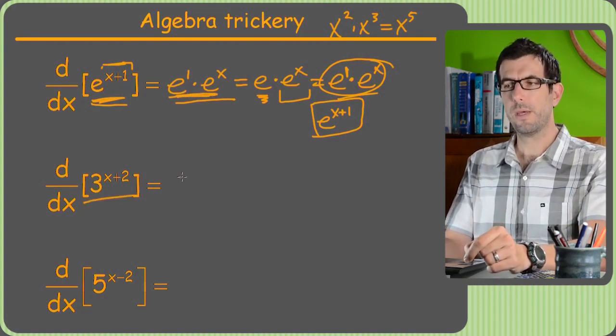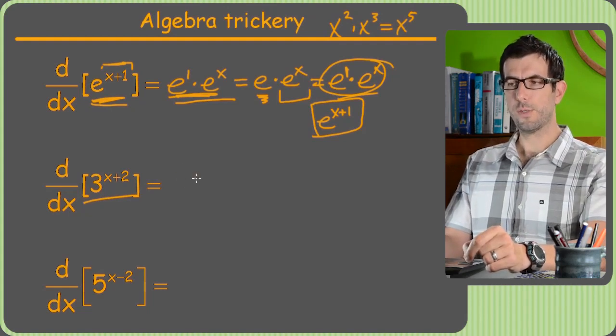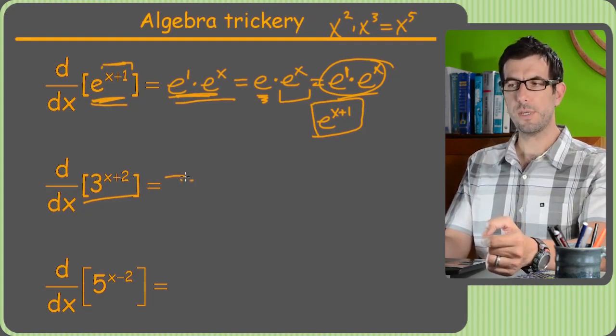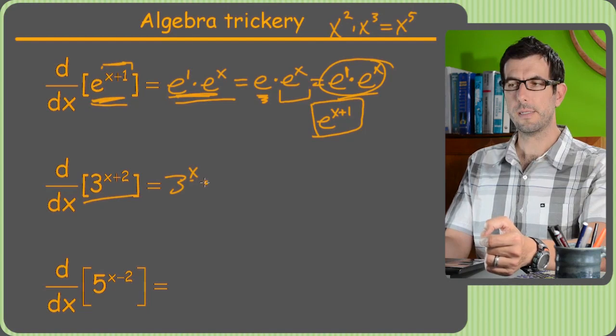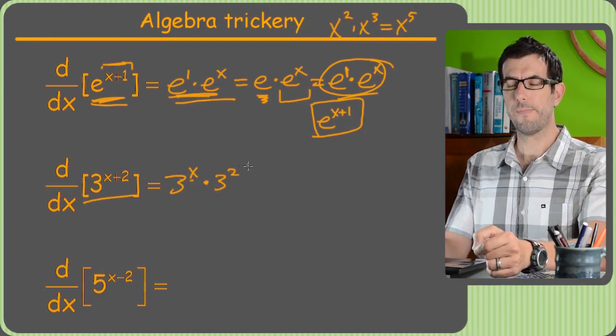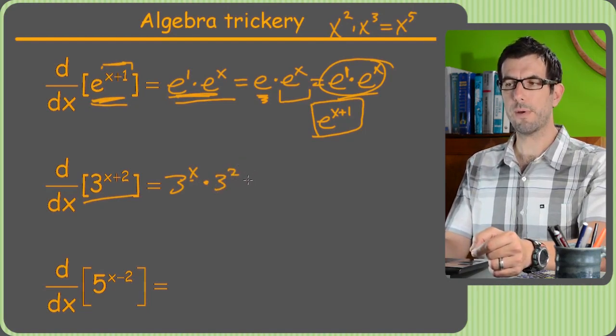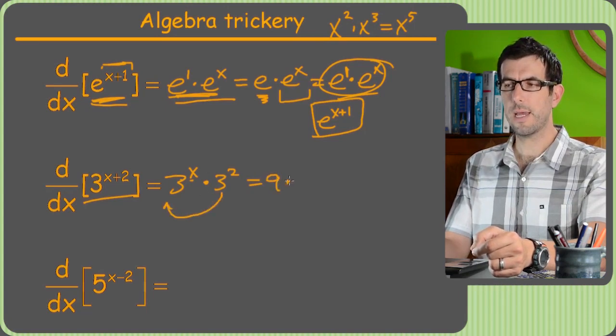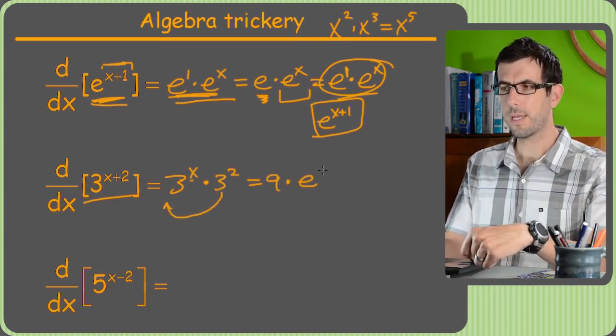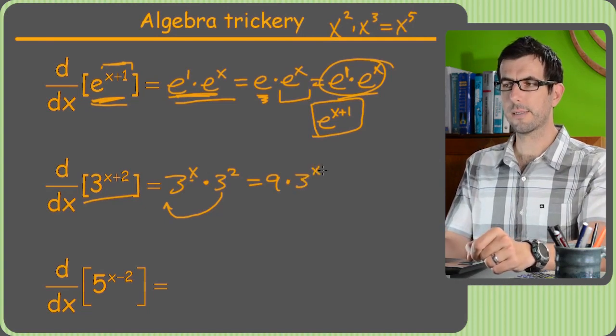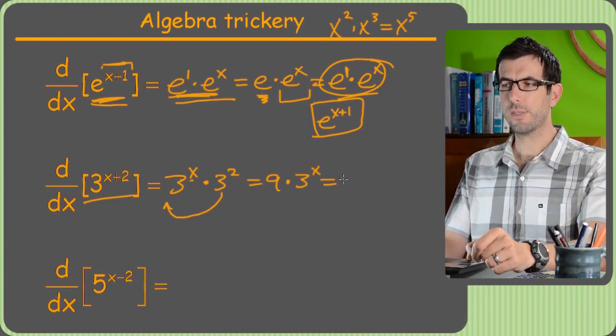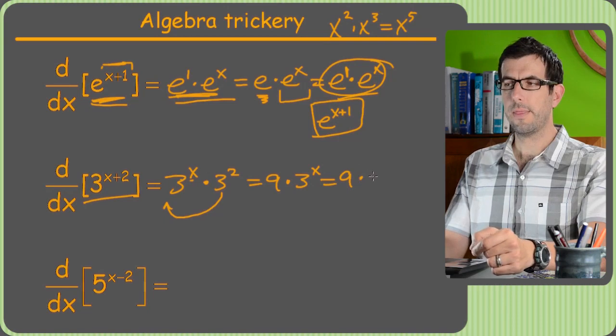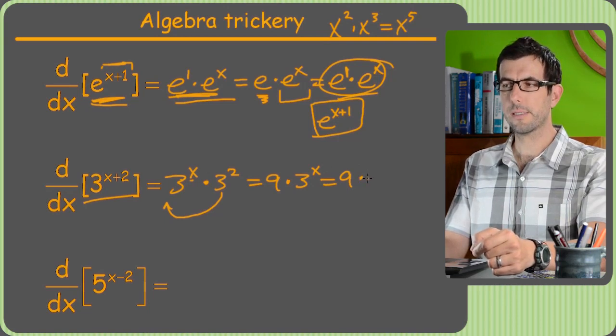You can do the same thing on this one. It won't be quite as straightforward, but 3 to the x plus 2 is really just 3 to the x times 3 squared. Right? And of course, I'd probably want to rewrite, since I like to have coefficients in front, so I'll rewrite this as 9 times 3 to the x. So when I take the derivative, I just leave the 9 alone. Then the derivative of 3 to the x is 3 to the x times ln of 3.